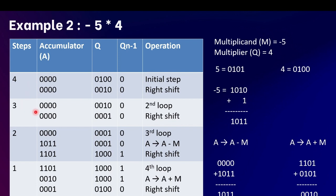When count equals 3, the accumulator is 0000, Q is 0010, and Q minus one is 0. As the LSB of Q is 0 and Q minus one is 0, we again perform an arithmetic right shift. After the shift we get accumulator 00000, Q 00001, and Q minus one equal to 0. Count decrements to 2.